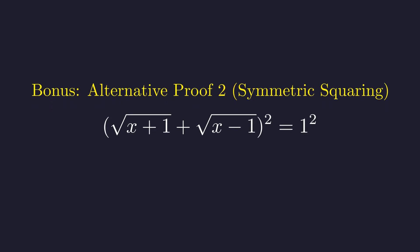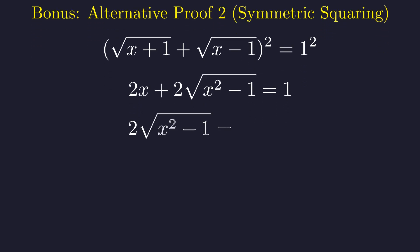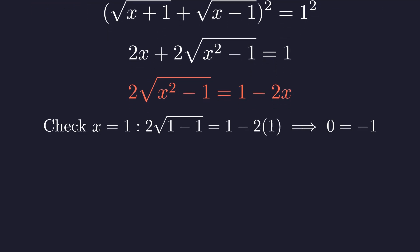Here's one more algebraic trick that leads to the same conclusion by a different path. This time, instead of isolating one radical first, let's square both sides of the original equation directly. When we expand the left side, we get x+1 plus x−1 plus 2 times the square root of the product, which simplifies to 2x plus 2√(x²−1). Rearranging to isolate the radical term, we run into trouble: the left side, 2 times the square root, must be non-negative, but the right side is 1 minus 2x, which is negative for all x in our domain. At x = 1 we get 0 on the left and −1 on the right; as x grows, the right side becomes even more negative. There's simply no way for these two sides to be equal.